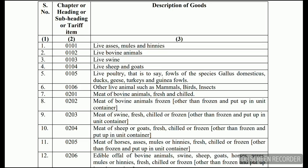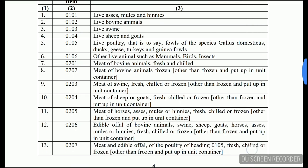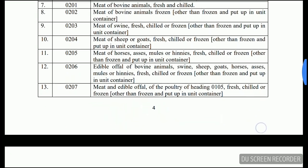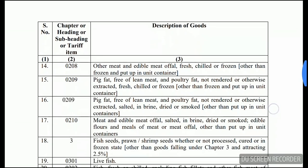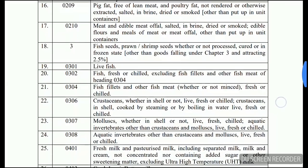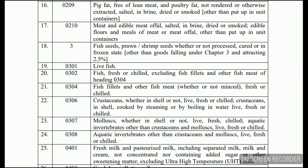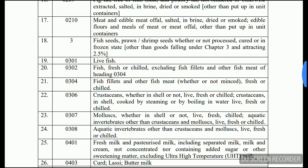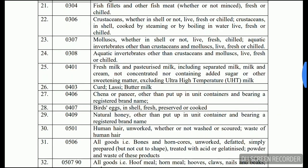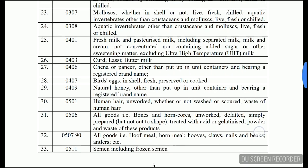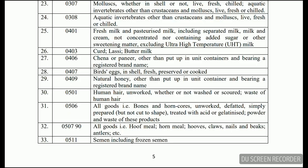The exempt goods include live animals such as live swine, live sheep, and other live animals. Also included are meat, pig fat, live fish, fresh fish, and fresh and chilled items in the case of meat and fish. Milk related items include fresh milk, pasteurized milk, separated milk, curd, lassi, buttermilk, chena, and paneer. Also birds, eggs, and natural honey — other than put up in unit container and bearing a registered brand name.